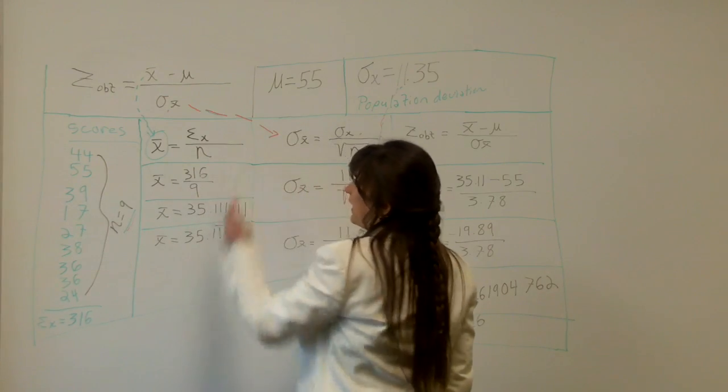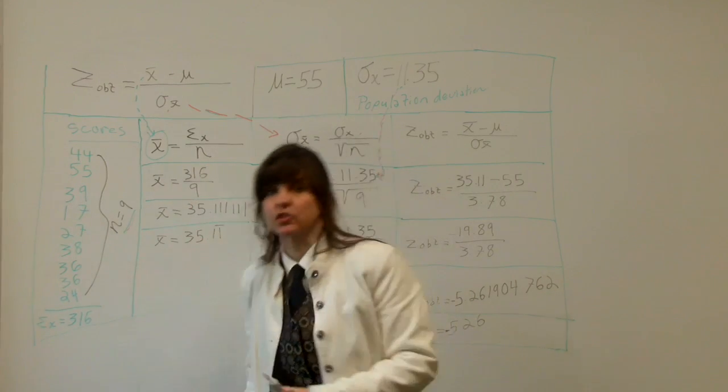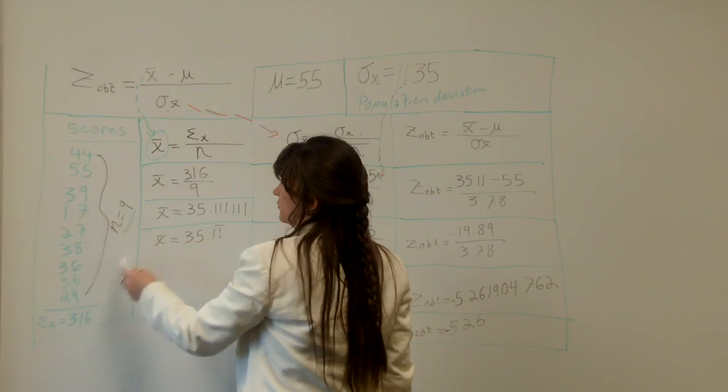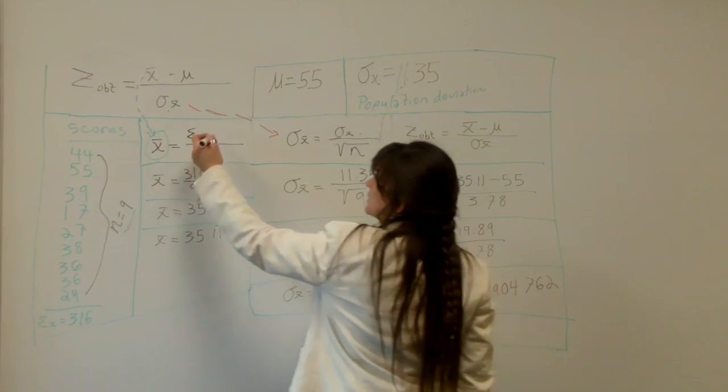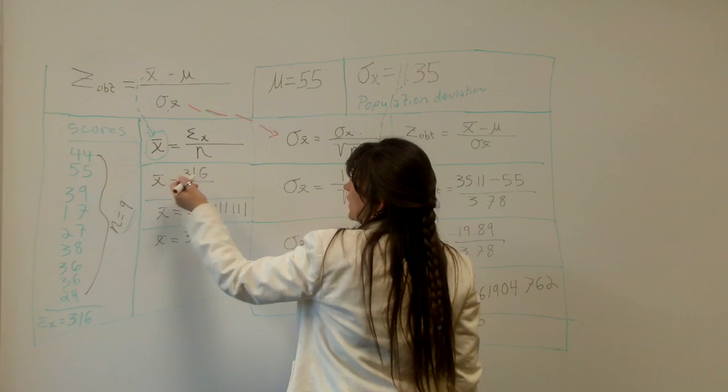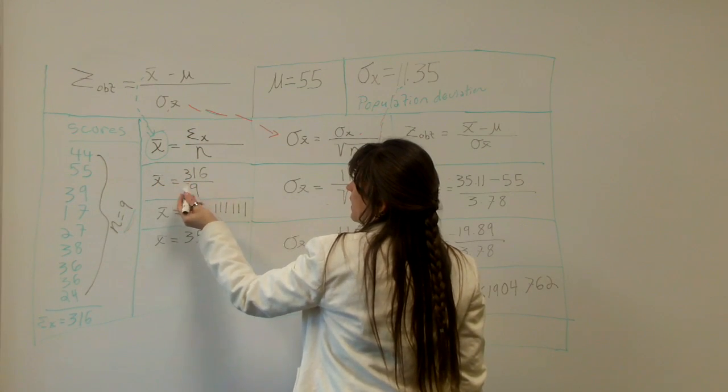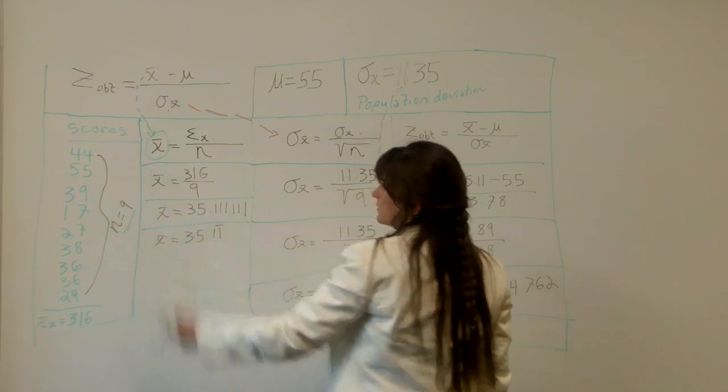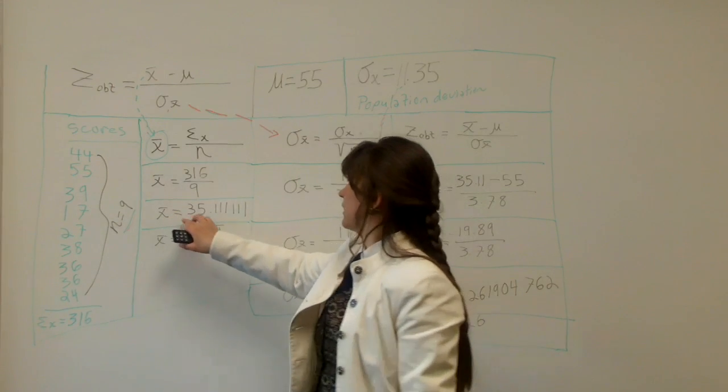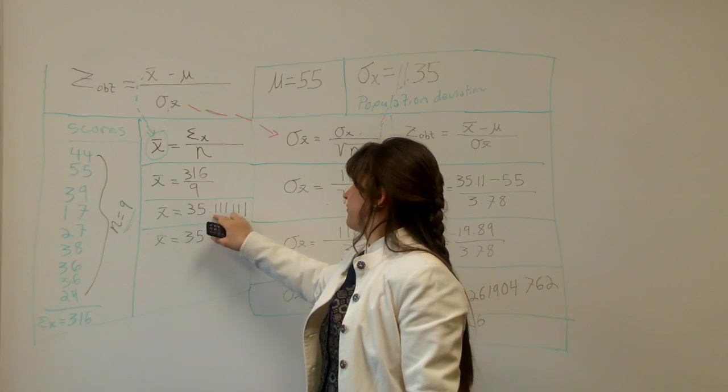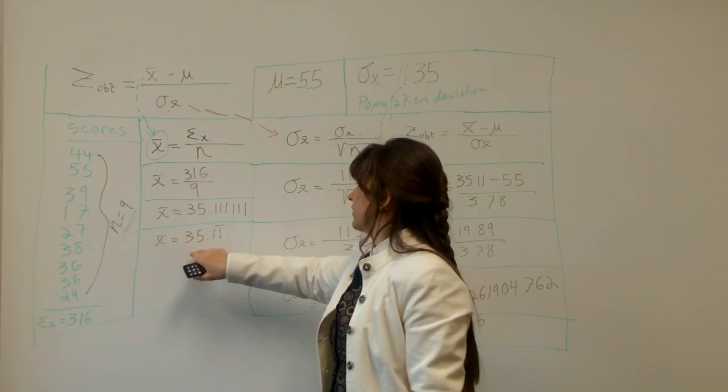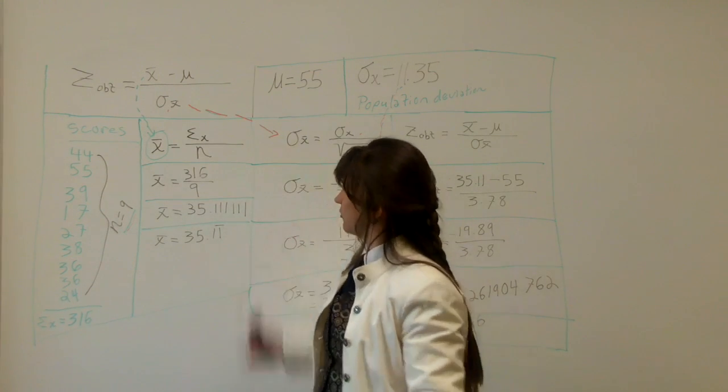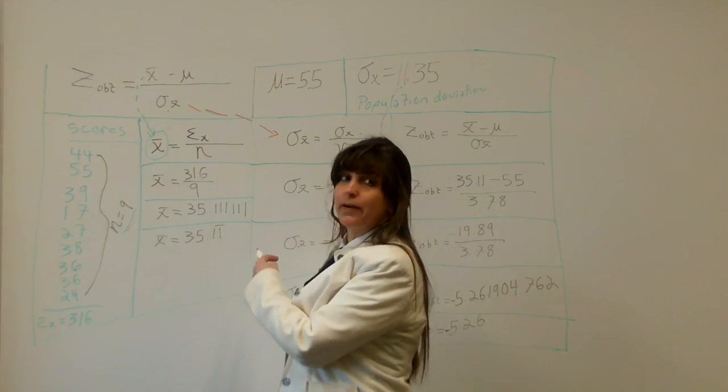And the N, which is the total number of scores, here there's 9 different scores so N equals 9. So what this is, is the sum of X, summation X, 316 divided by 9. So bar X or the sample mean equals 35.1111, which as you round it equals 35.11.